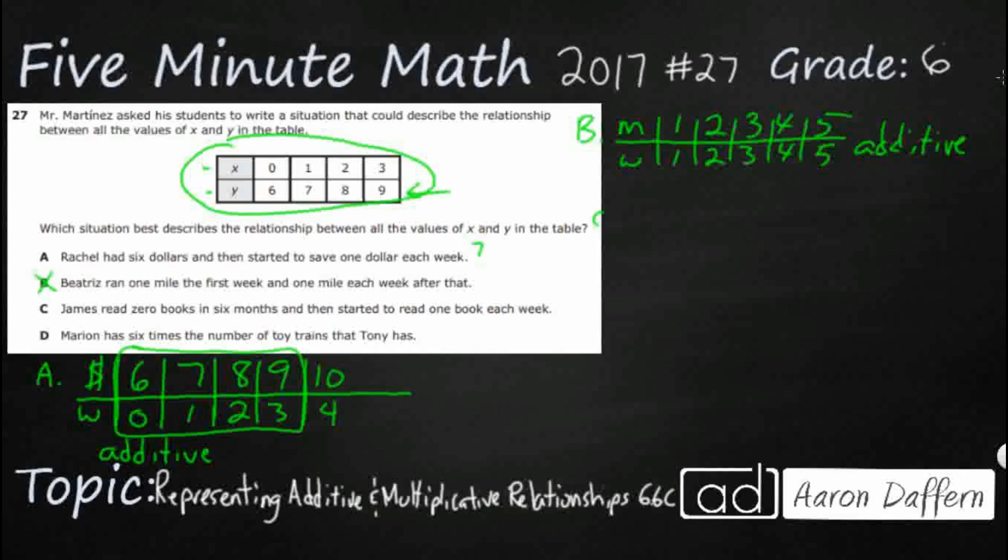Let's look at C here. So James read zero books in six months. So we're looking at months. I'll put MO, then I'll put books, just MO so we don't confuse it with miles. So zero books in six months. All right, so six months, zero books, and then start to read one book each week. So it looks like this is not even months. This might be weeks. That's kind of confusing.